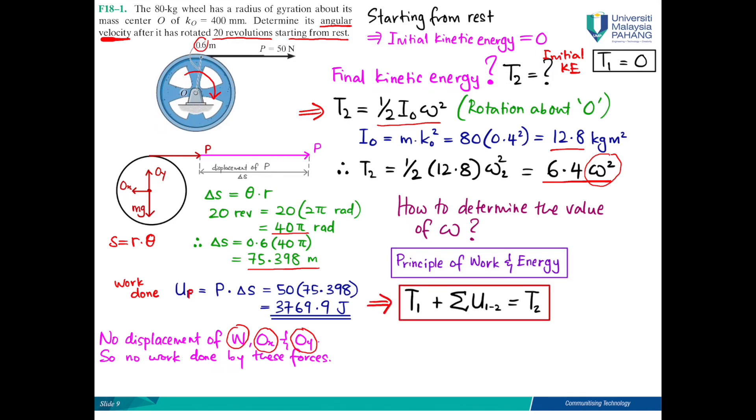T1 plus the total work done to move from position one to position two is equal to T2. In other words, this means that the initial kinetic energy plus the total work done is equivalent to the final kinetic energy.